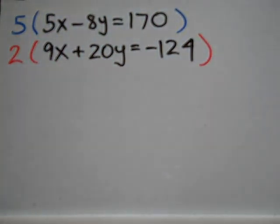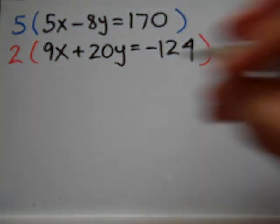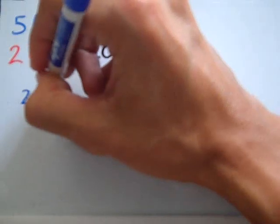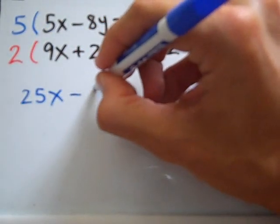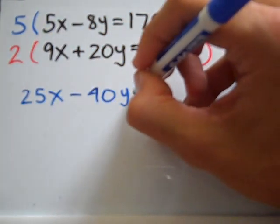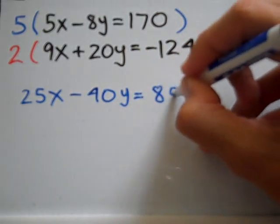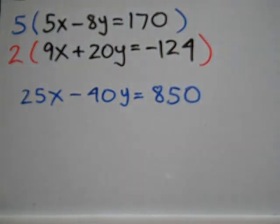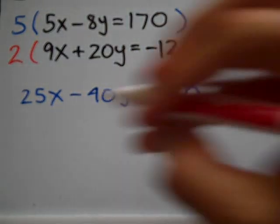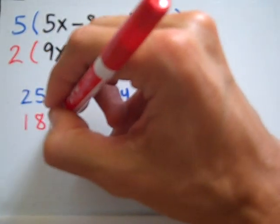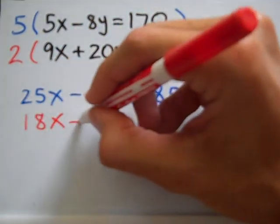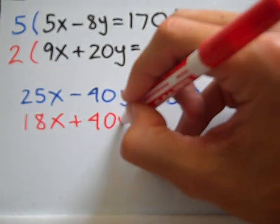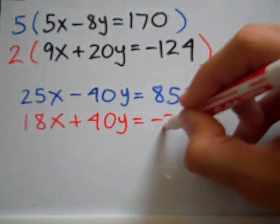And so when I multiply the first equation by 5, what I'll have is 25x minus 40y is equal to 850 and when I multiply the second equation by 2, what I'll have is 18x plus 40y is equal to negative 248.